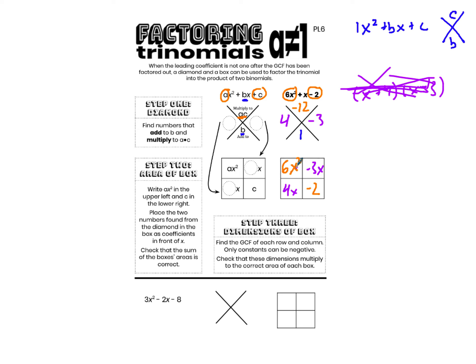Now I need to find the outside — what are the factors that multiply to this inside? There's a really great way to do this: find the GCF of the rows and the columns. If I find the GCF of the rows and columns, I will have factors that multiply to the inside of the box, which simplifies to my original trinomial. So what is the GCF of this row — 6x squared and negative 3x? The GCF of 6 and negative 3 is positive 3, and the GCF of x squared and x is just x. So the GCF of 6x squared and negative 3x is 3x.